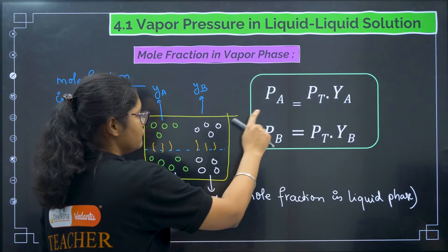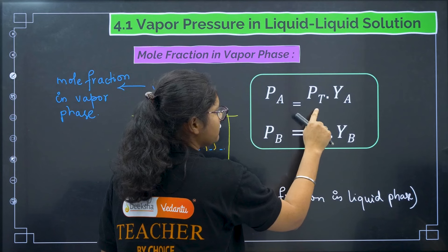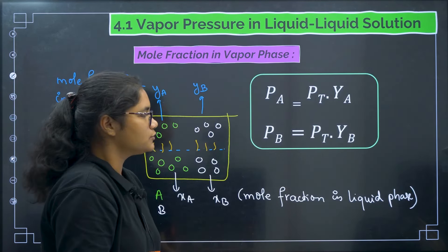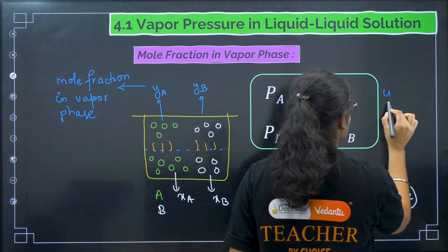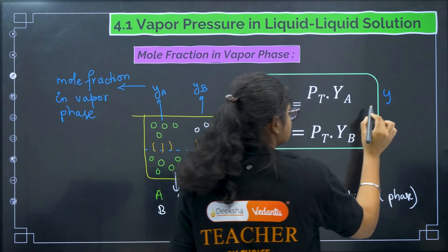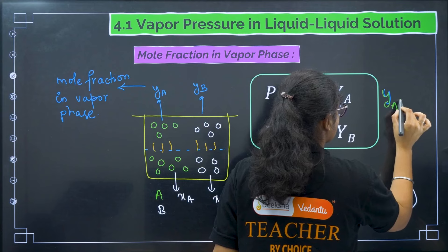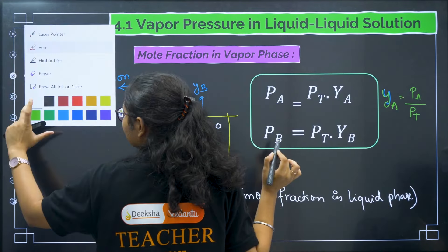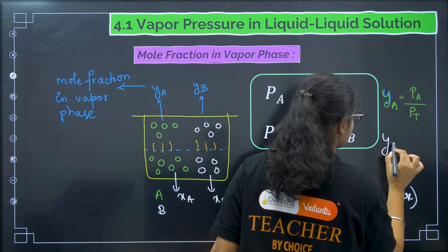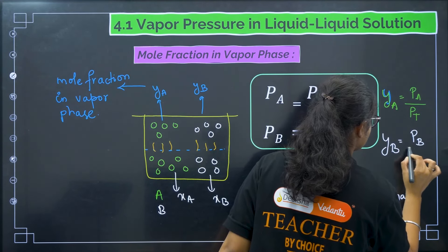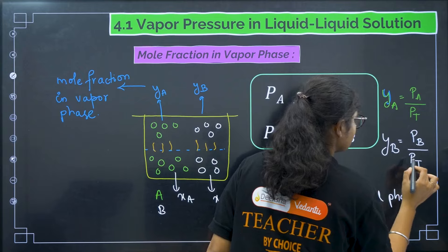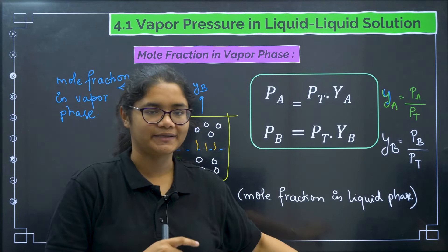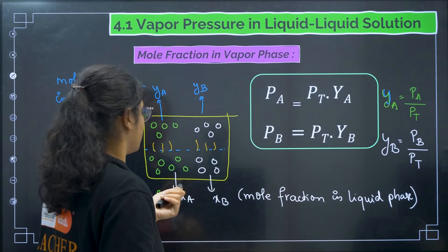The relationship is: PA = P_total × YA and PB = P_total × YB. Therefore YA = PA / P_total and YB = PB / P_total. The total pressure is P_total = P°A·XA + P°B·XB. We will now do a question to make this completely clear.